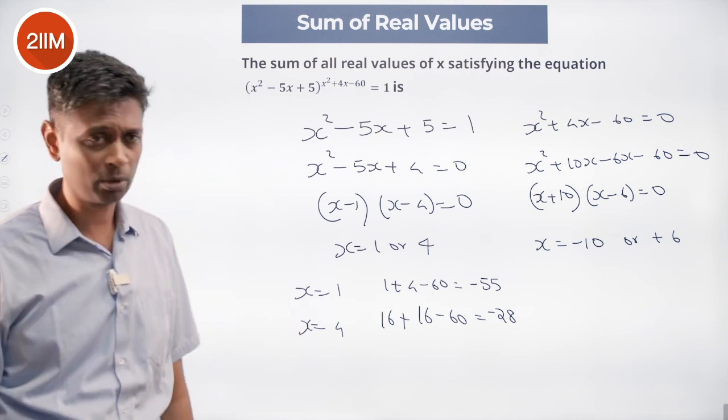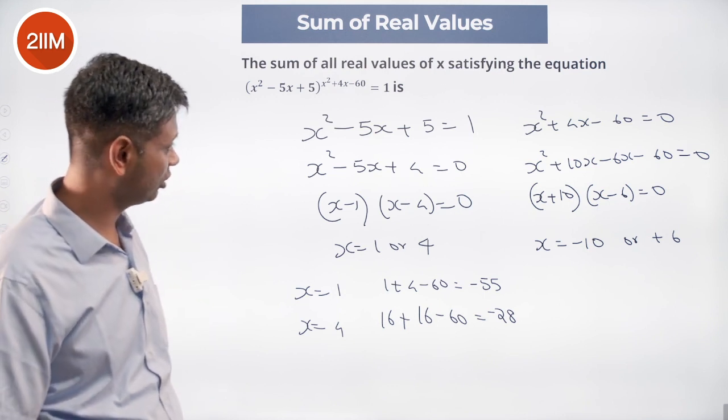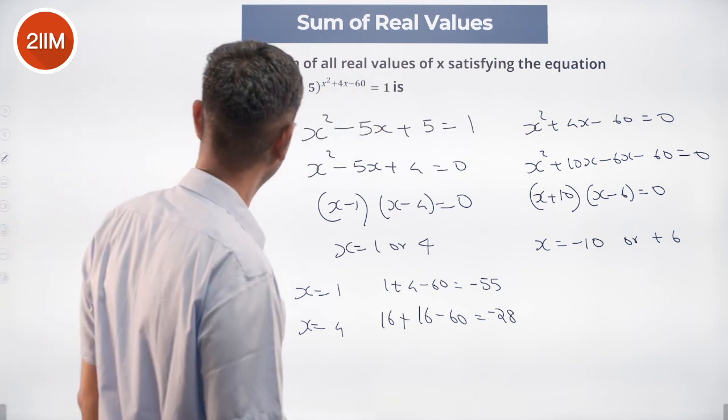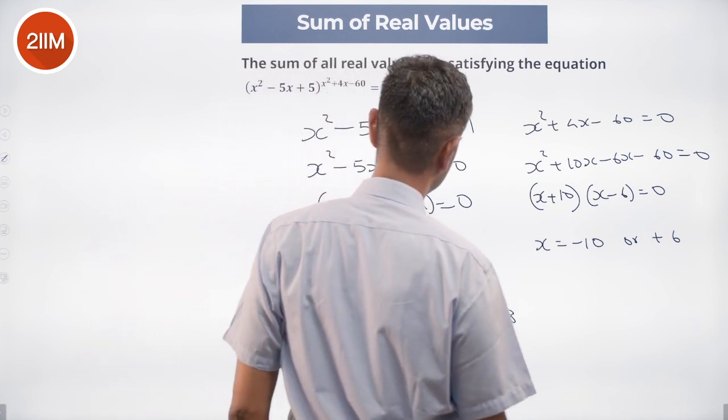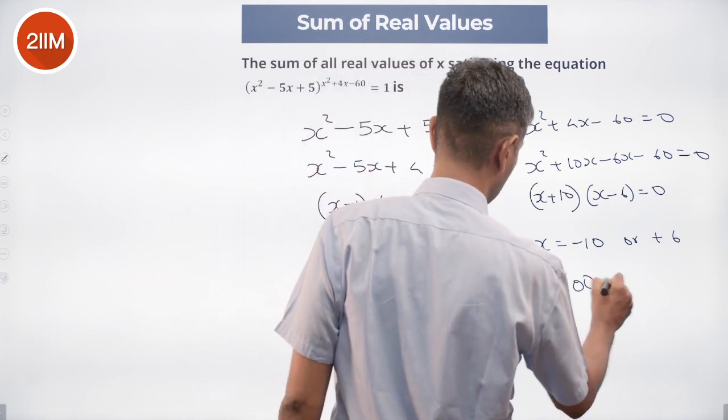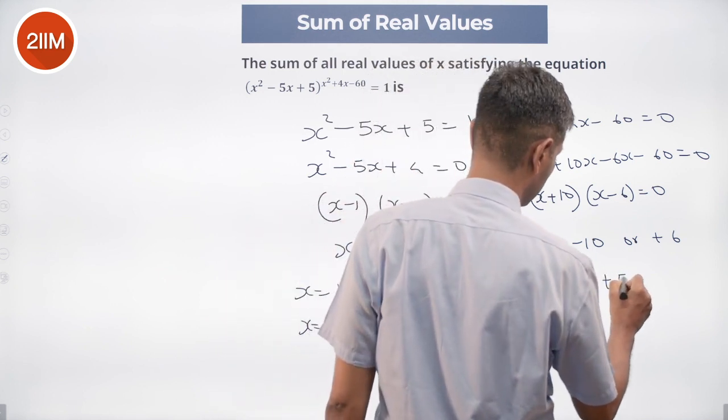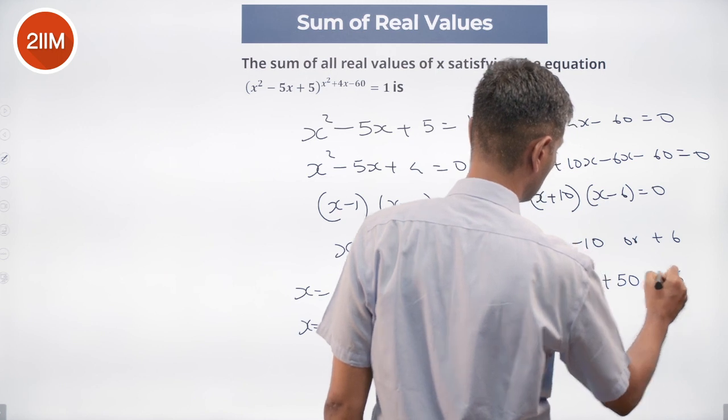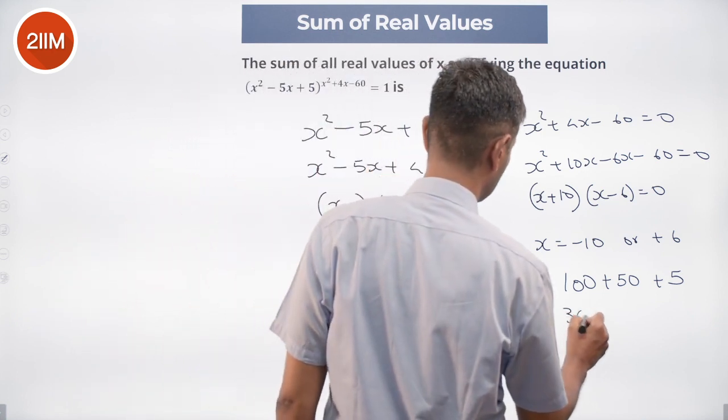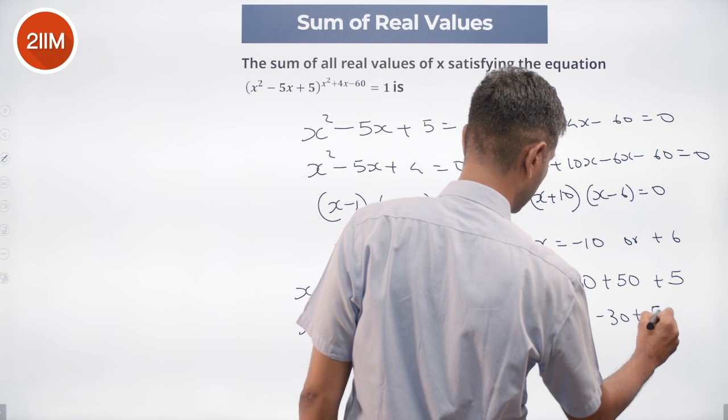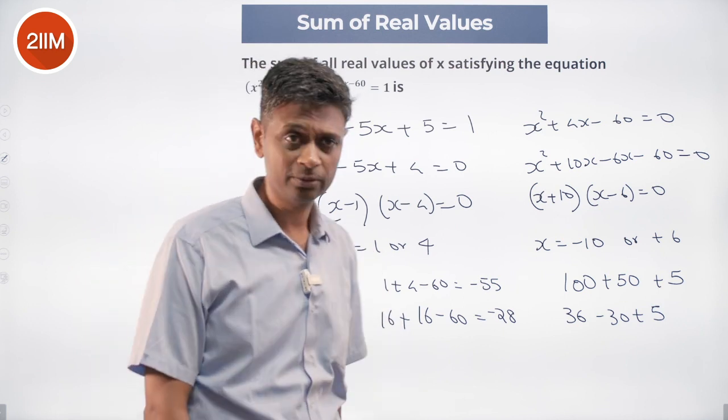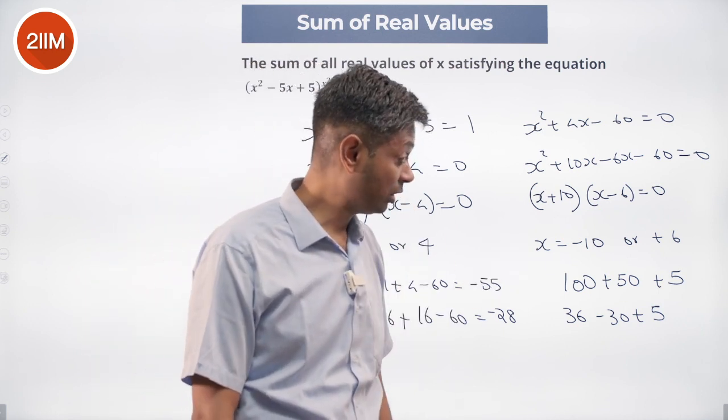x equals minus 10 or plus 6. In this case this will go to 0, I have to check this. Minus 10: x² is 100 minus 5 into minus 10 plus 50 plus 5, yeah, 155 power 0, which works. Or put x = 6: 6² is 36 - 30 + 5, 11 power 0. 1 + 4 is 5, minus 10 is minus 5, plus 6 is 1. Nice, beautiful, we got this.